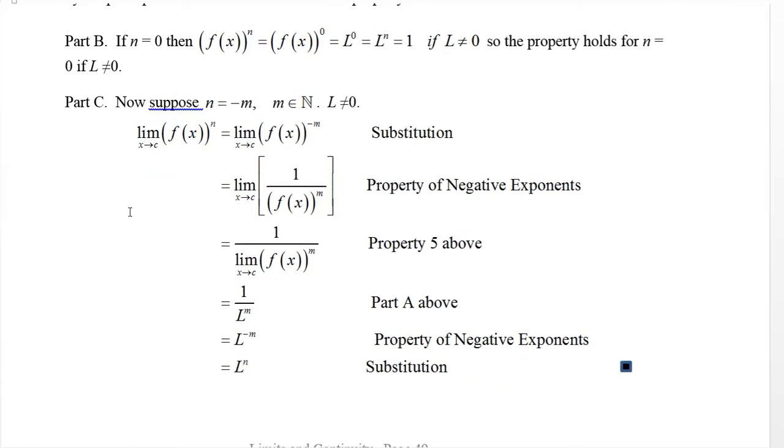Now suppose, so we basically got it true for zero and for natural number powers. What about for negative integer powers? So we've got it true, we've shown it's true for power zero and one, two and three and four and five and so on. But what about negative one, negative two, negative three? So this time we're going to suppose n is the opposite of m, where m is a positive natural number, a positive integer, and so n is a negative number. And again we're going to assume that L is not zero in this case.